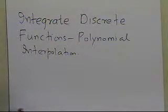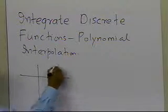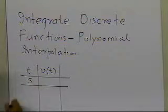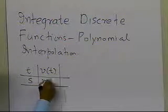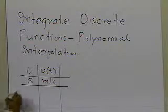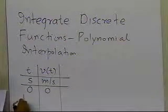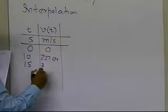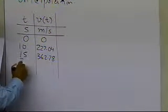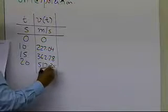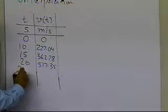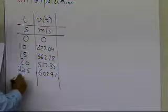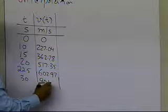Suppose you're given velocity as a function of time for a rocket, with time in seconds and velocity in meters per second. The data given is: at t=0, velocity is 0; at t=10, it is 227.04; at t=15, it is 362.78; at t=20, it is 517.35; at t=22.5, it is 602.97; and at t=30, it is 901.67.